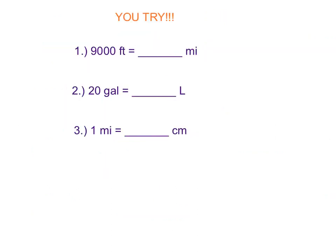Just like in the previous slides, I want you to please pause the video now and try to get these answers on your own. I'm not going to go through and show the work for these ones — I'm just going to show the answers. If you still need help after these, please meet with your instructor for some individualized help. The answers are: Question 1 is 1.7 miles; Question 2: 20 gallons is equal to 5.29 liters; and Question 3: 1 mile is equal to 160,934 centimeters.